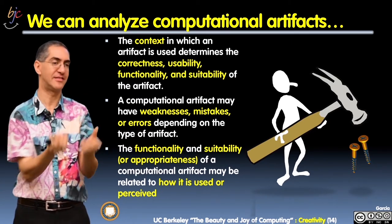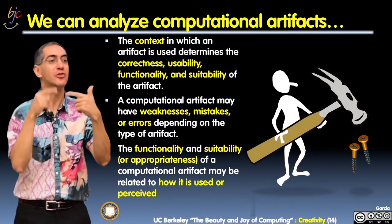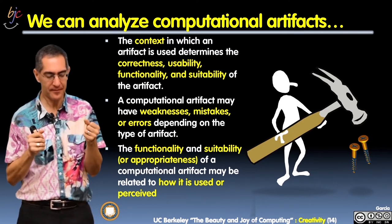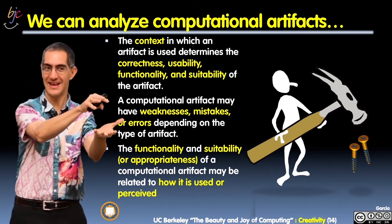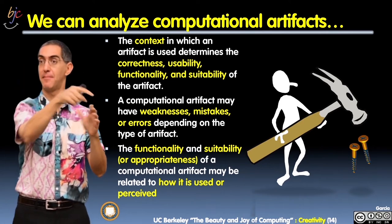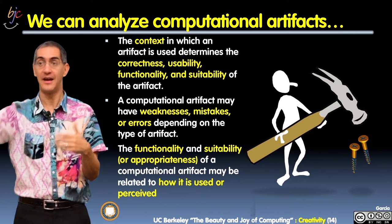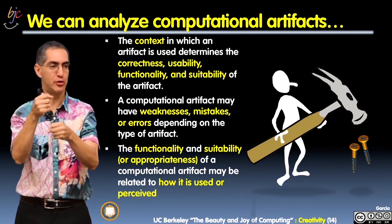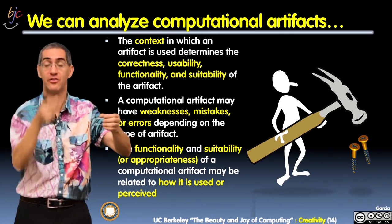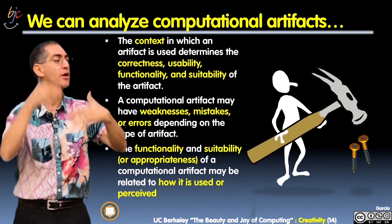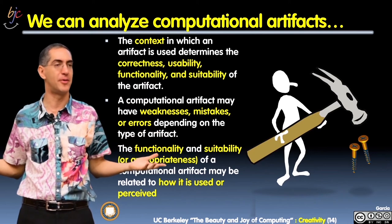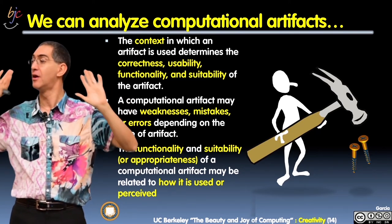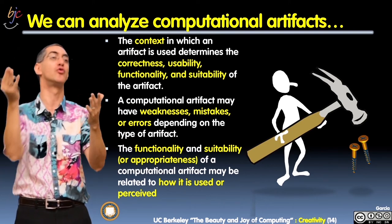Functionality and appropriateness depend on how an artifact is used or perceived. If I think a tool is going to be used for one technique but it's really meant for another, I might evaluate it as inappropriate — because I'm thinking about it in the wrong context. For example, you build this great thing that's really a hammer — a metal part and a stick — but I assume it must be for screws because they have a round head and go into wood. So I call it inappropriate for driving things in, because I have the wrong context. In fact, it has great functionality for what it's meant to do. But because my perception of the context was wrong, I'm evaluating it poorly.